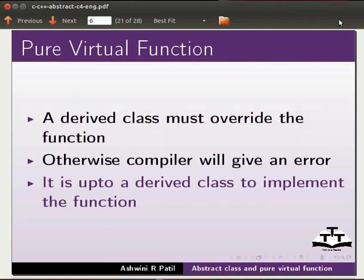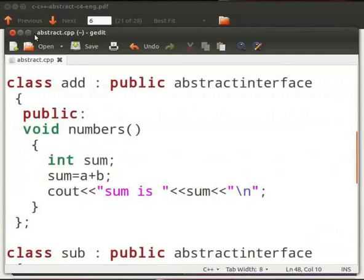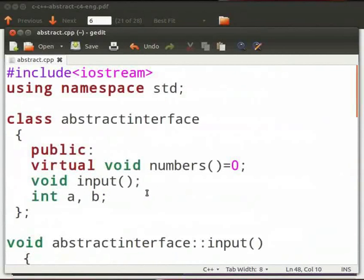Let us look at an example. I have already typed the code on the editor. I will open it. Note that our file name is abstract.cpp. This example involves addition and subtraction of two numbers. Let us go through the code.